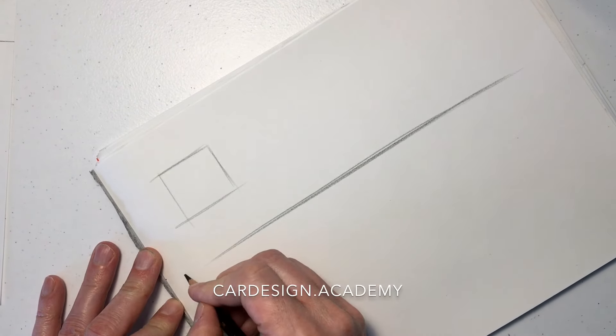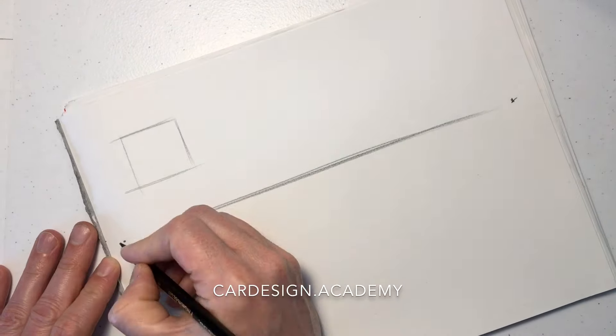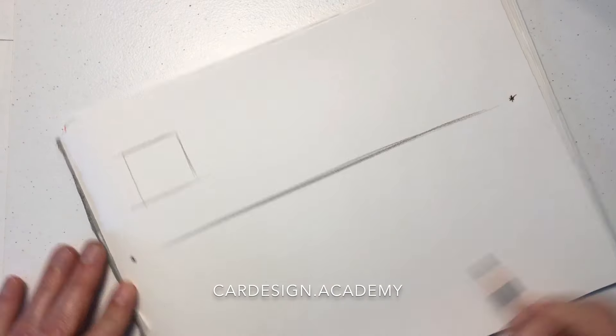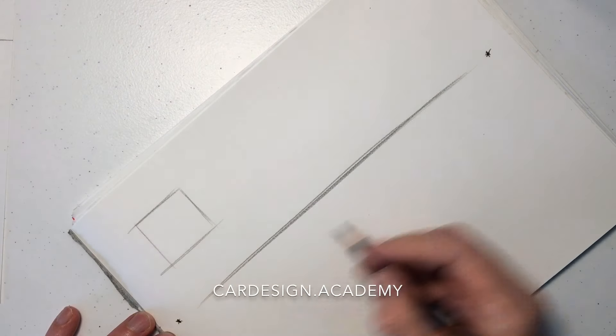Starting with a horizon line, we're going to draw a cube. A cube is basically a three-dimensional square, equal sides.